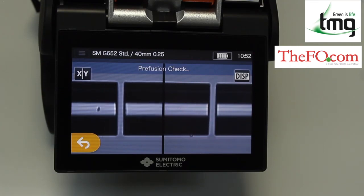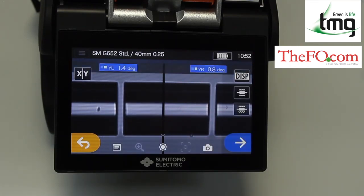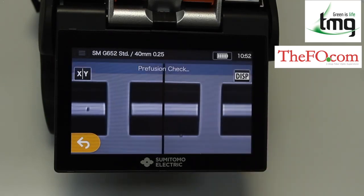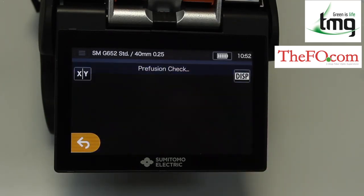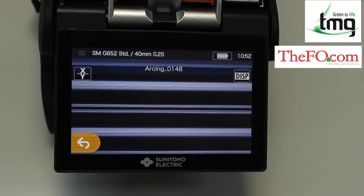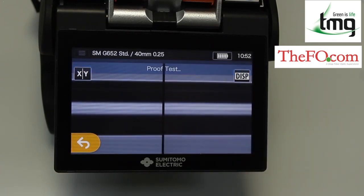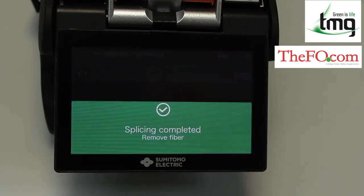The splicer will move the fiber cores up, down, left and right to align them. Once aligned and happy, press the go button. Okay, the splice is carried out and it gives you an estimated loss. If I press the arrow again it will just do a proof test to make sure the fibers have held well.